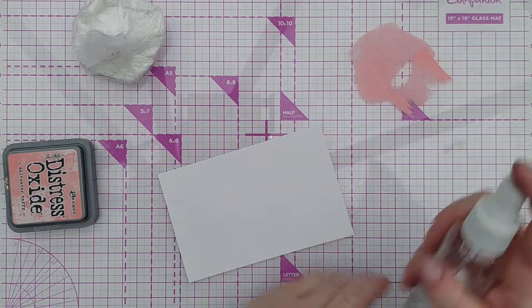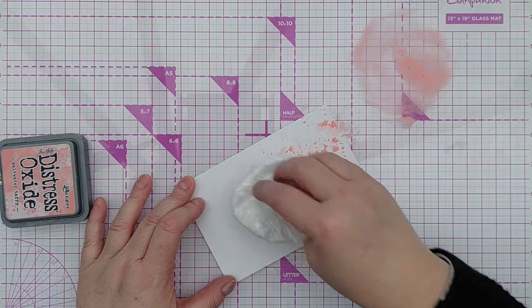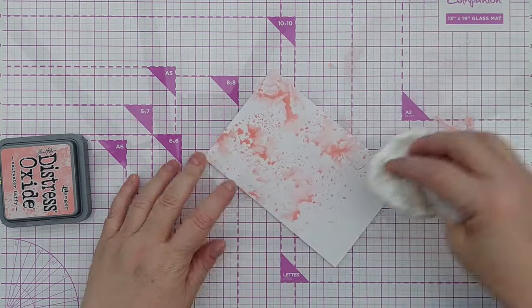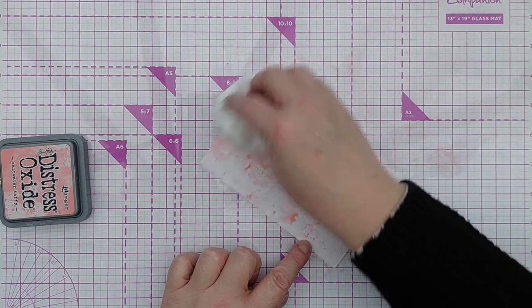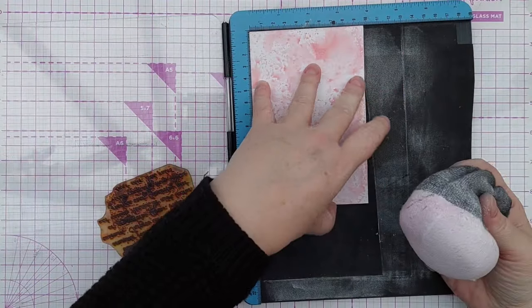I've got Salt Water Taffy Distress Oxide here, and I'm smushing it on a bit of mixed media paper with my smusher. If you want to know how to make a smusher, there is a video linked above and below. Once that was dried, I popped it in my stamp positioner.